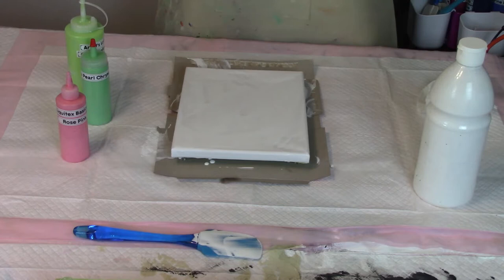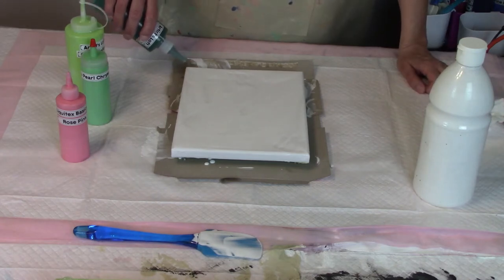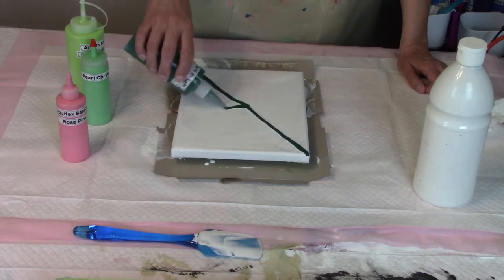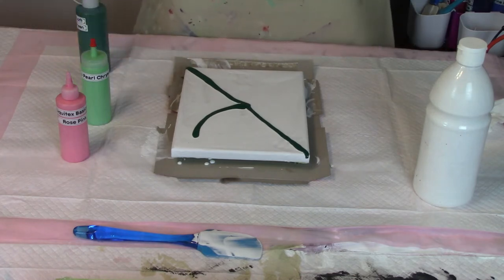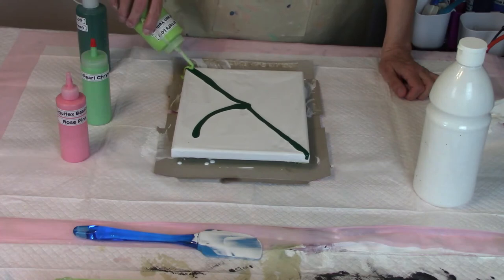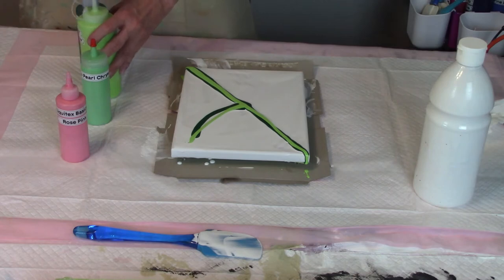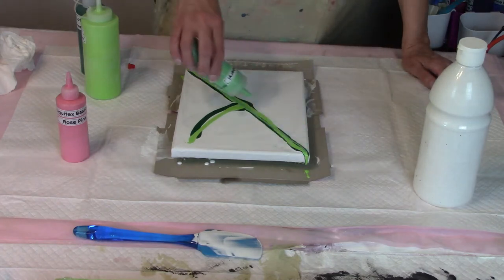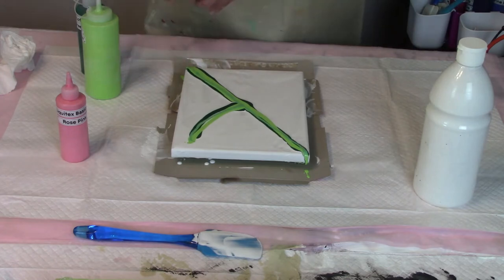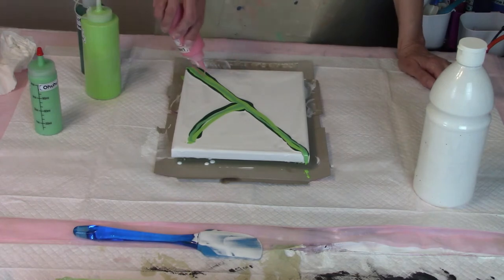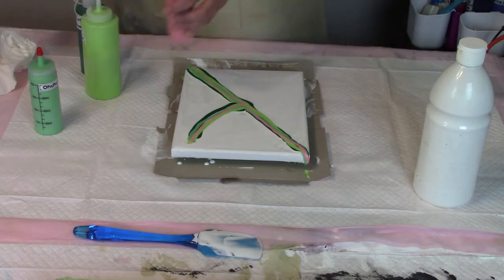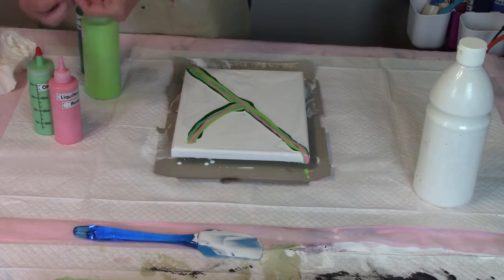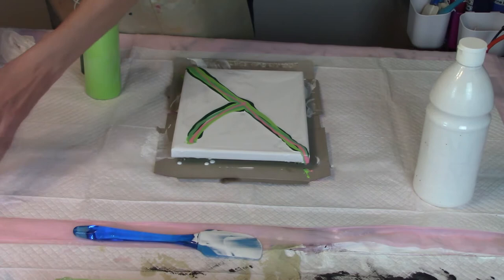And last but not least, my accent color is going to be Liquitex Basics Rose Pink. I had to actually go out and buy some more of this because I ran out. So again, the whole point of this is number one to try out these greens and pink together, and number two to try out my new hair dryer. So here we go. I am going to do a cute little corner to corner, and I'm actually going to put a little spray up on this one because I want to see if this dryer works and how it works.